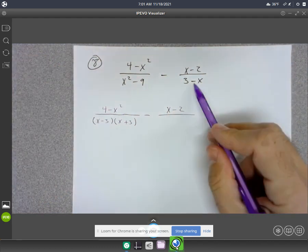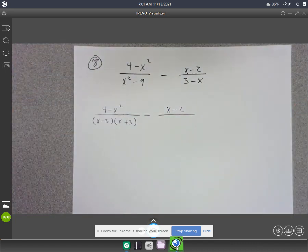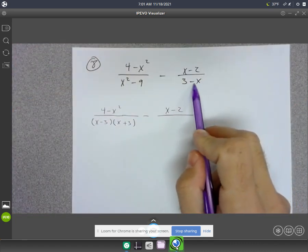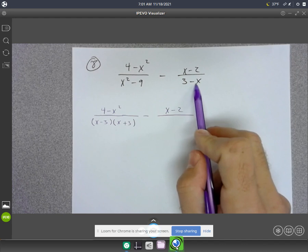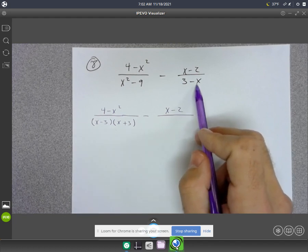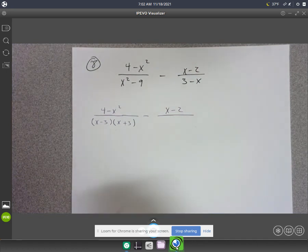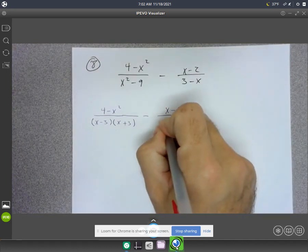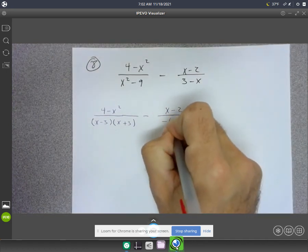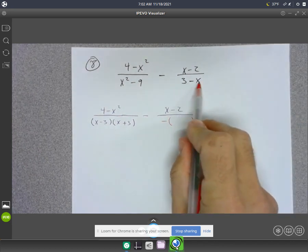Now, I know this thing doesn't technically factor, but because the leading term, because the linear term is negative, I need to factor out a negative here. If your leading variable term is negative, you always want to factor that out. So I'm going to factor out a negative.